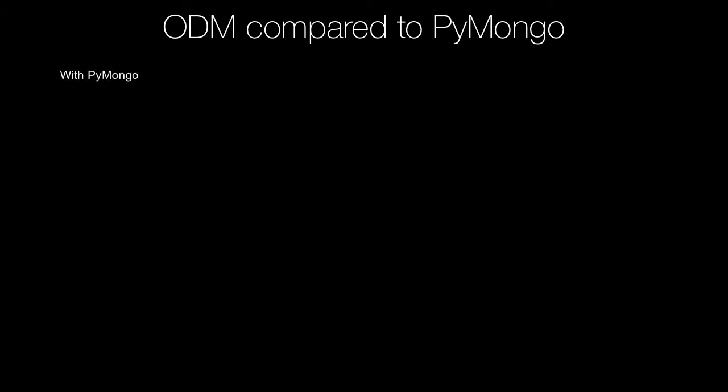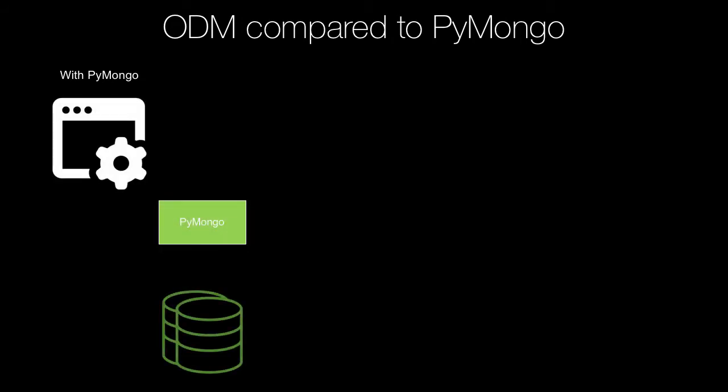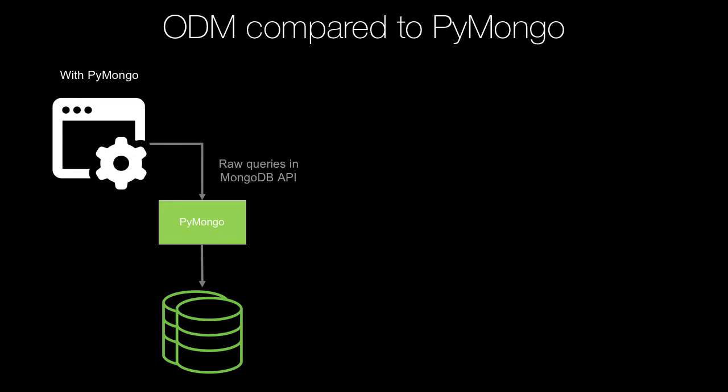If you're working with MongoDB in terms of running and managing it, from a code-writing perspective we're going to focus on something higher level — an ODM — so we can take structured classes and map those to and from the database. With PyMongo, you write direct queries in the raw MongoDB API, passing dictionaries to PyMongo. It uses those as part of the query and you get dictionaries back. It's pretty unstructured, but it's very low level and fast.